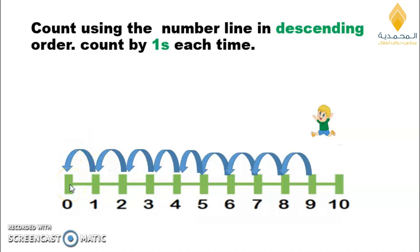The number line helps us to count. Let's count by ones in descending order. Count with me, start from nine: nine, eight, seven, six, five, four, three, two, one, zero. Excellent!